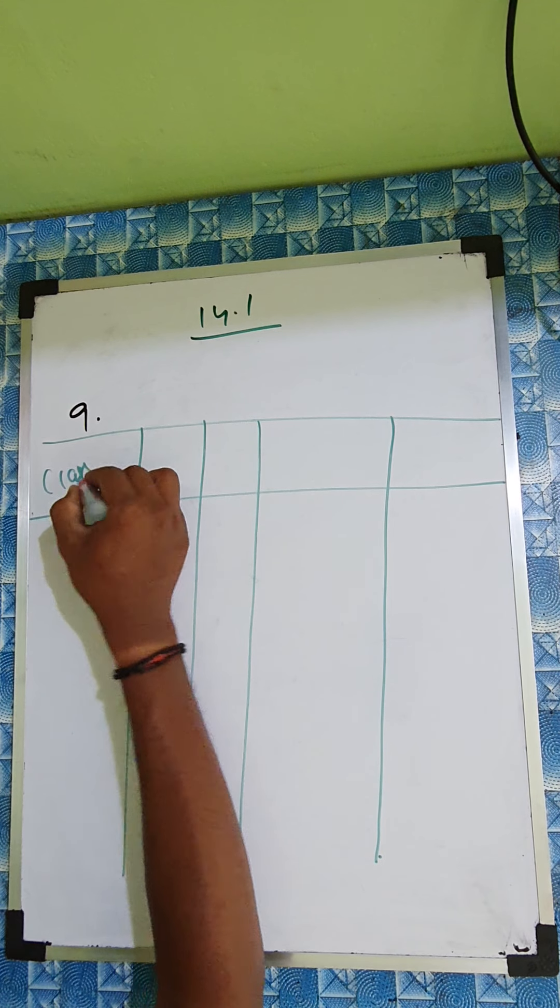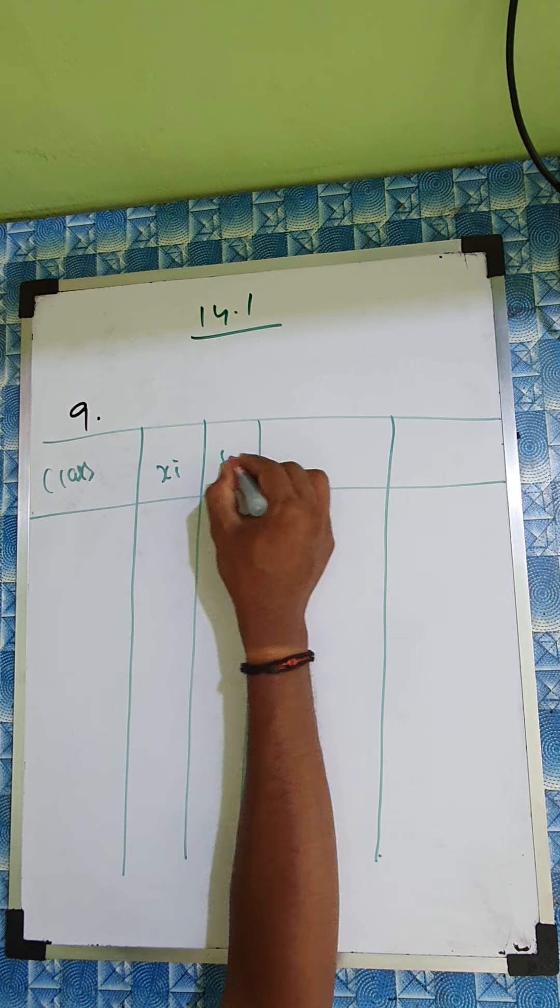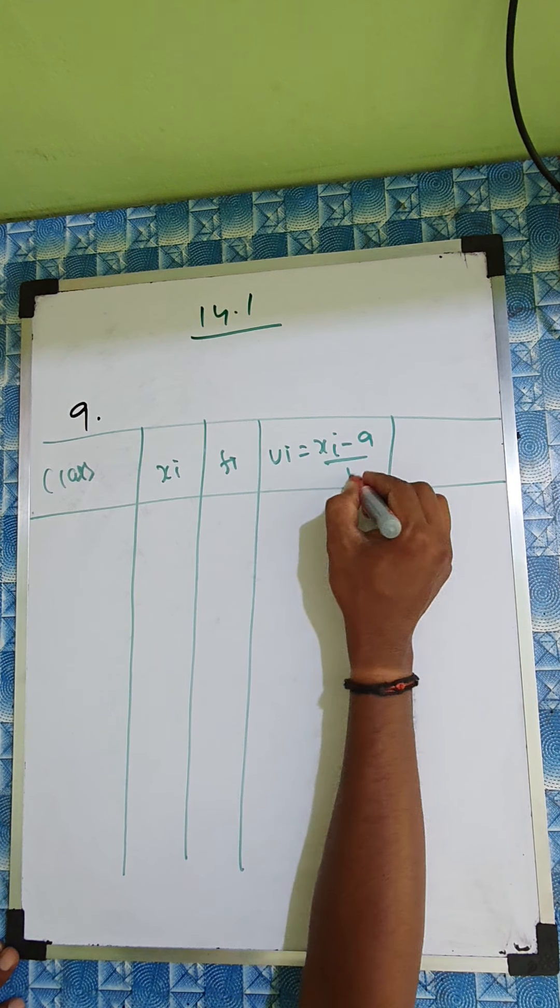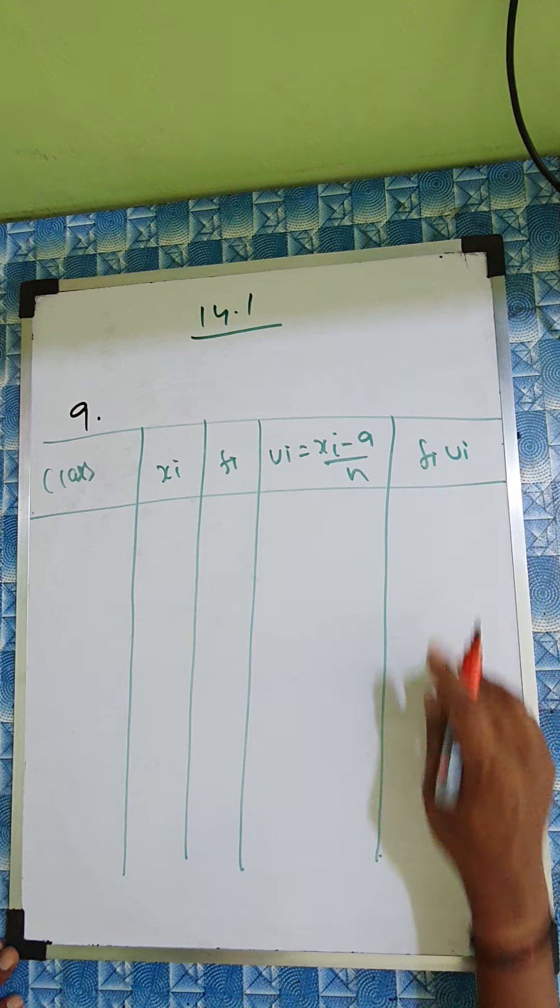So the class, xi, fi, ui equal to xi minus a by h, fi ui.